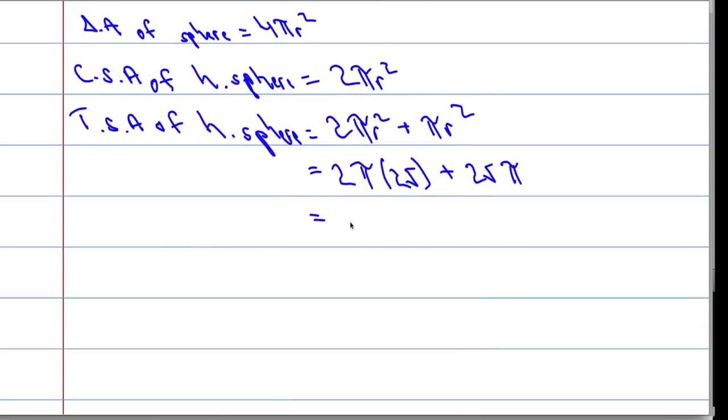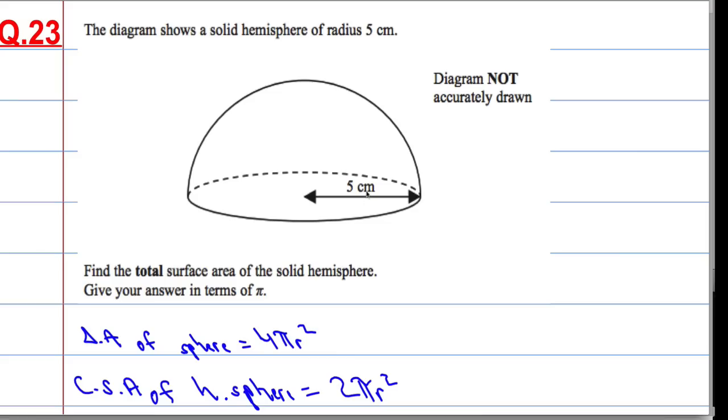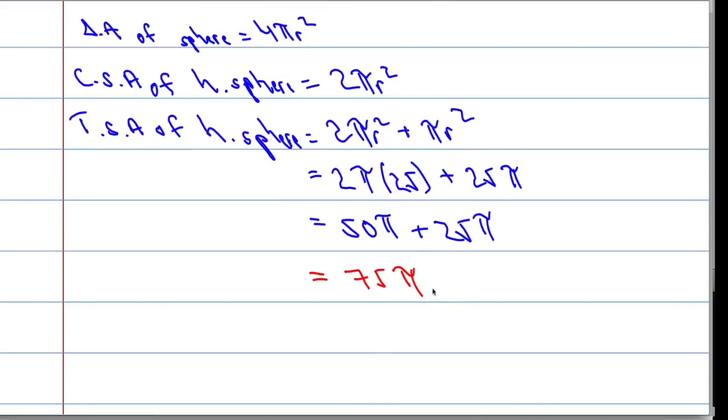So, this is 50 pi plus 25 pi, which in total is 75 pi, and let's give the units. We've got centimeters, we're talking about area, so it's going to be centimeters squared. So, 75 pi centimeters squared.